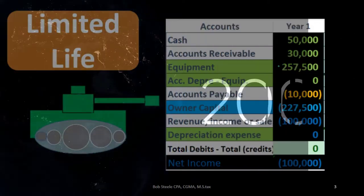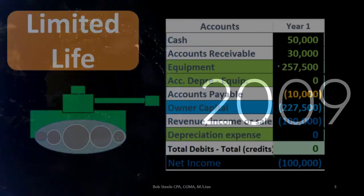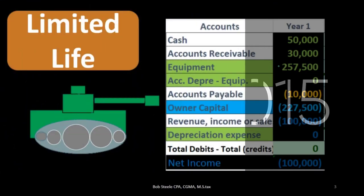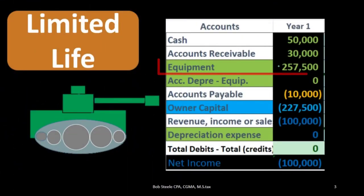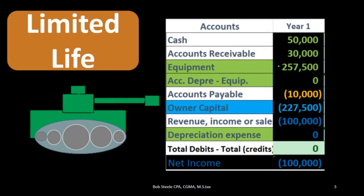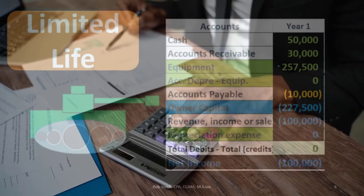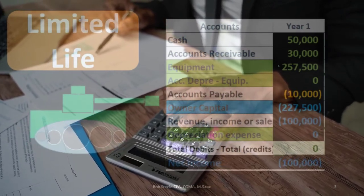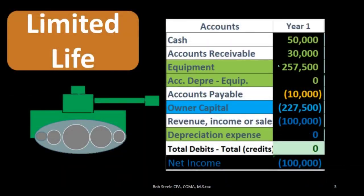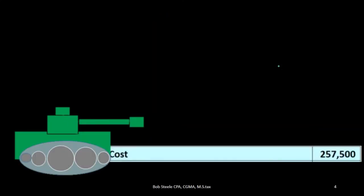Limited life — how many years will we have this for? How will we then allocate the cost over that time period, depreciating in an appropriate way in relation to the use of that tank in accordance with the matching principle? In order to do that, one way is the straight-line method, which uses the limited life within that calculation.